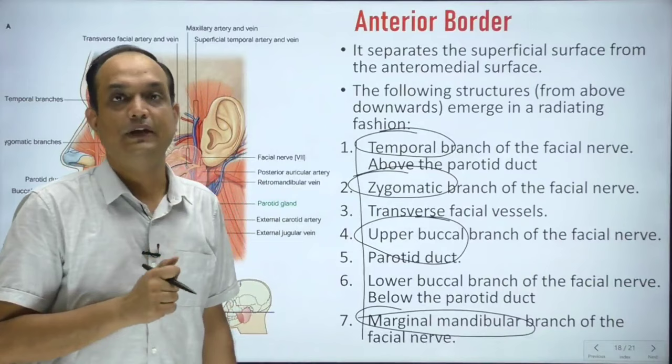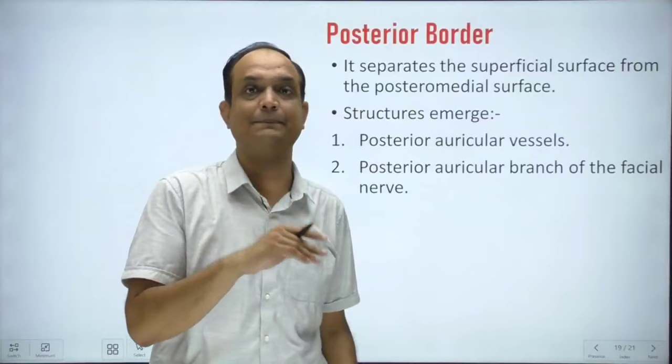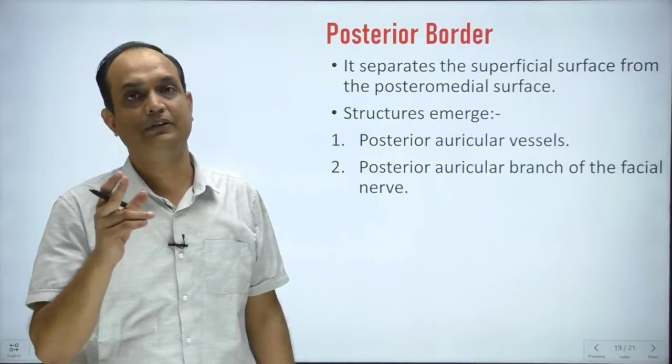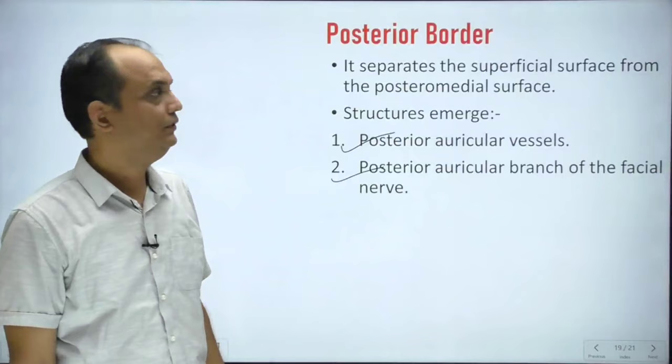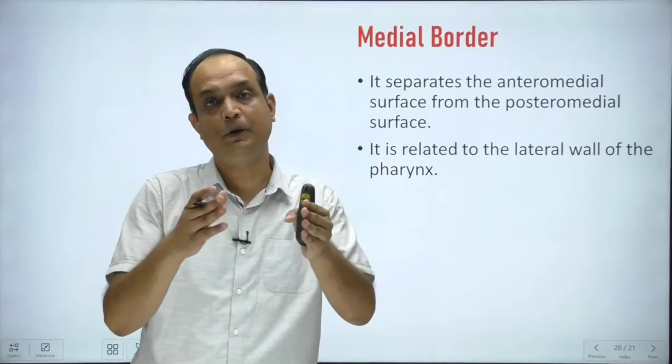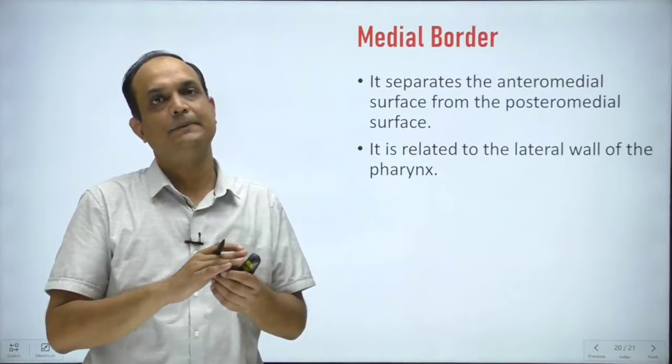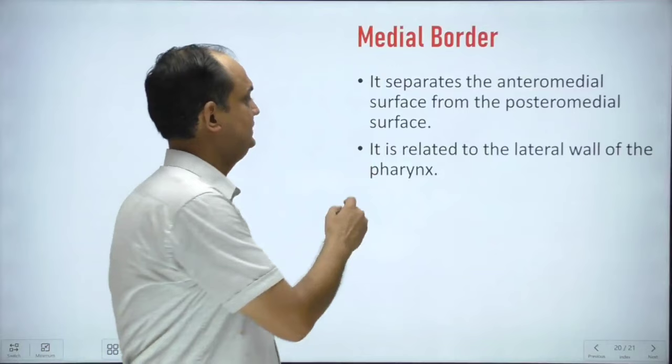The posterior border separates the lateral surface from the posteromedial surface, and from the posterior border you have two structures: the posterior auricular artery and the posterior branch of the facial nerve. The medial border is a deep border approaching the pharynx — that is why it is also known as the pharyngeal border — and the posteromedial surface is related with the lateral wall of the pharynx.